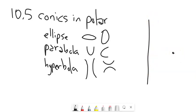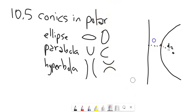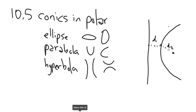Parabolas wrap around the focus. Any point on it — if I measure the distance to the focus, which I'll call distance two, and the distance straight across to the directrix, which I'll call distance one — they're equal to each other. So any point on the parabola has the same distance from the directrix as from the focus. That's one way to define a parabola.